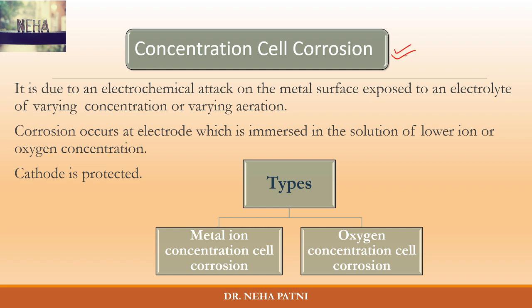Today I am going to explain what we understand by concentration cell corrosion. Again, the key word is 'cell' — when it is a cell, you need to identify which portion is anodic and which is cathodic. The presence of electrolyte is essential. What happens here is there is a development of a concentration cell.